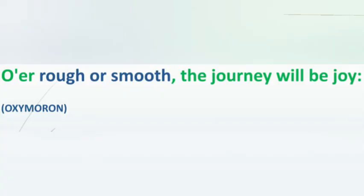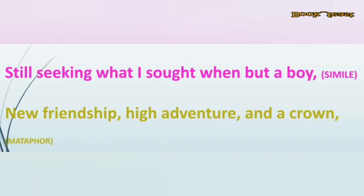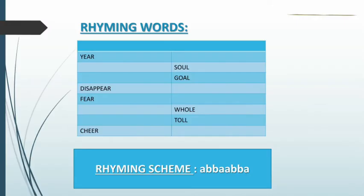'Rough and smooth' also becomes an oxymoron. For simile, when you compare something outwardly it is called simile; when it is hidden, it is called metaphor. The line 'still seeking what I sought when but a boy' is simile. 'New friendship, high adventure, and a crown' — he metaphorizes something into these — new friendship, high adventure, and a crown — so this is metaphor. For rhyming words, words with the same pronunciation sound are rhyming words. Here you can see: year, disappear, fear, cheer — and soul, goal, wall, toll.